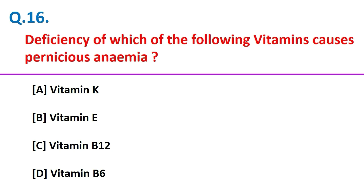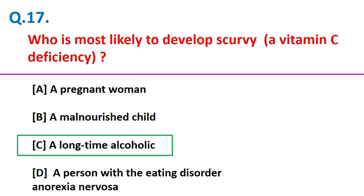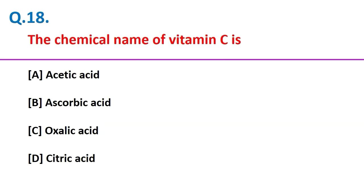Deficiency of which of the following vitamins causes pernicious anemia? Vitamin B12. Who is most likely to develop scurvy, a vitamin C deficiency? A long-time alcoholic. The chemical name of vitamin C is ascorbic acid.